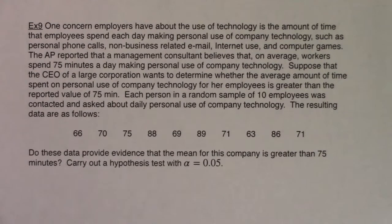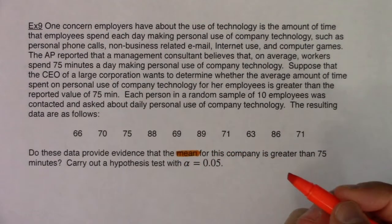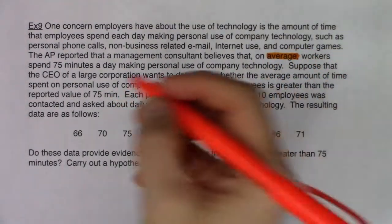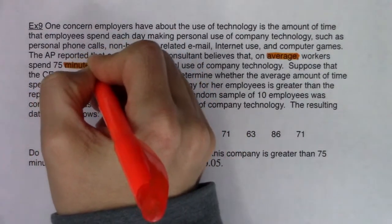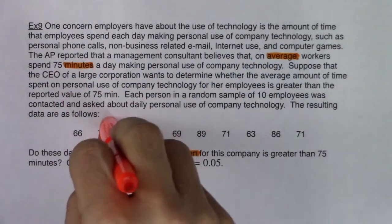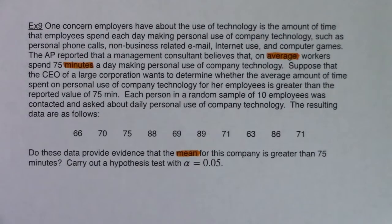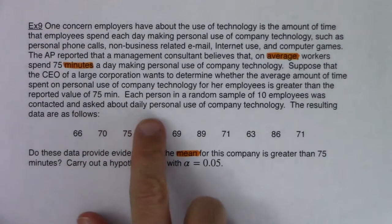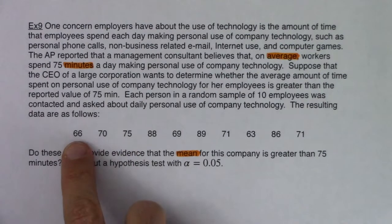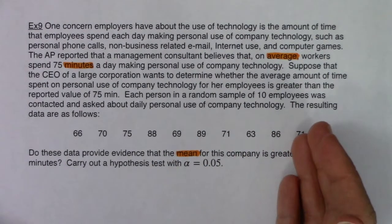Words I glommed onto: I see the word 'mean,' I saw 'average,' and I saw units — 'minutes.' Those three things indicate I'm in mean land. Also, if you think about this random sample of 10 employees, the variable being measured is daily personal use of company technology — and you can see this is numerical data: 66 minutes, 70 minutes, 75 minutes. It's a numerical variable, and we look at averages when dealing with numerical variables.